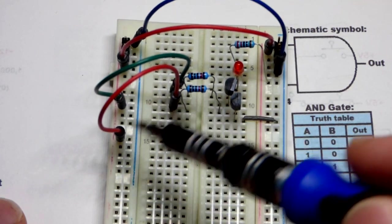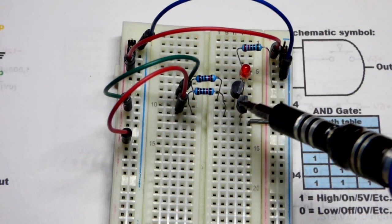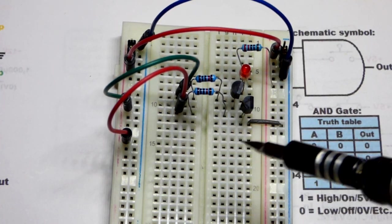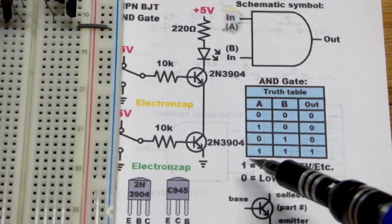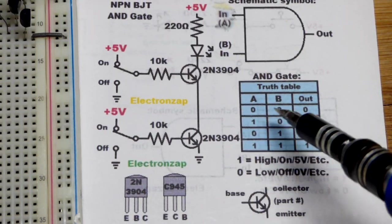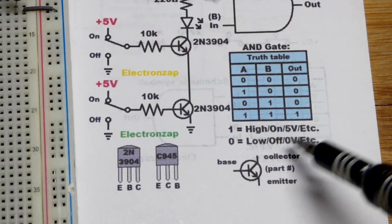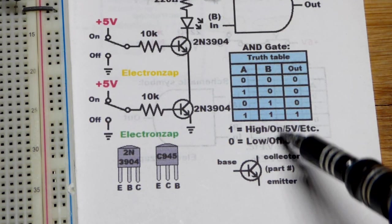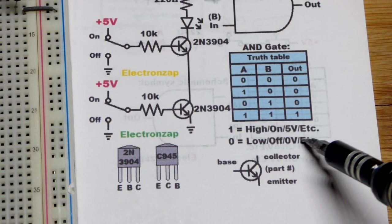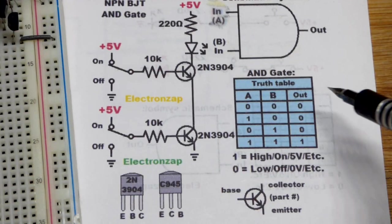But we have to give a positive signal right there to turn the transistor on right there. So again, the ones and zeros of the truth table there can mean all kinds of things. But commonly, it's either high or low, on or off, five volts or zero volts. And so just be aware of that.